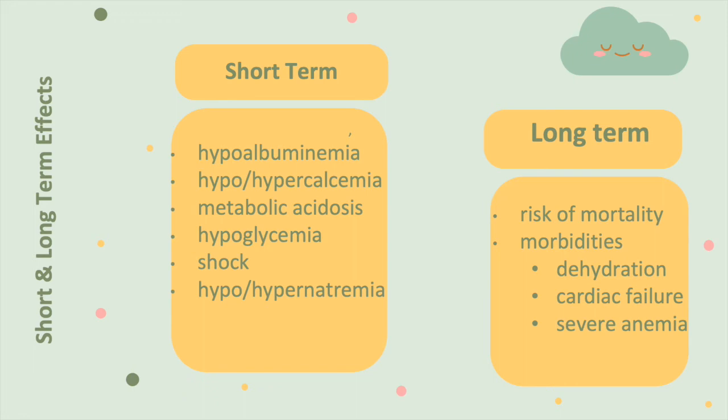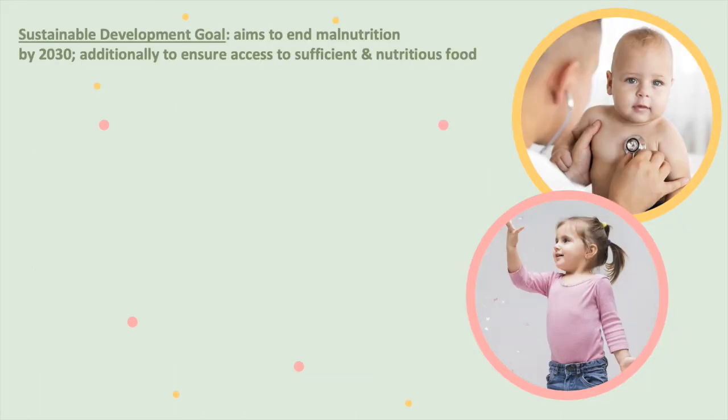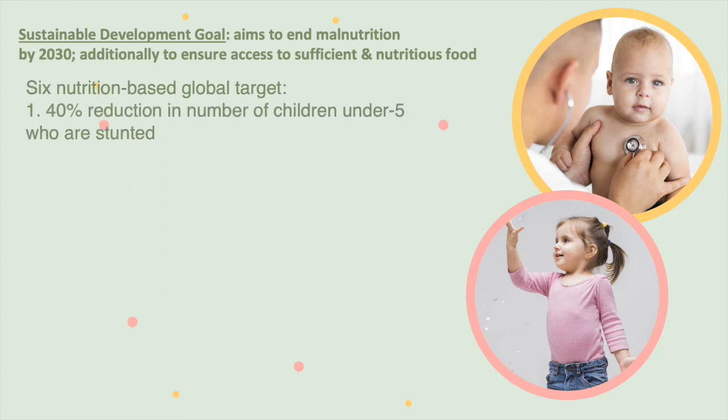Long-term effects: they are at risk for mortality and morbidities from dehydration, cardiac failure, and severe anemia. The Sustainable Development Goal aims to end malnutrition by 2030 and ensure that every individual has access to sufficient and nutritious food. Six nutritional-based global targets have been created.